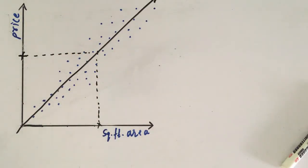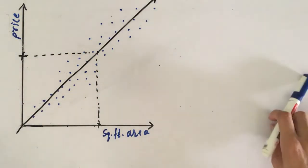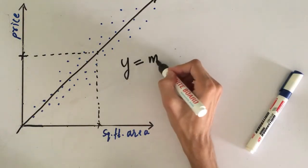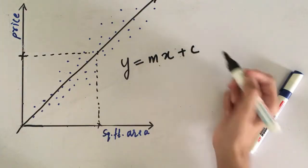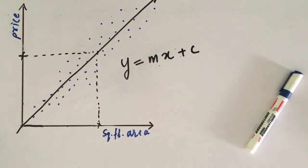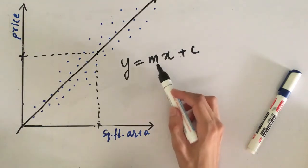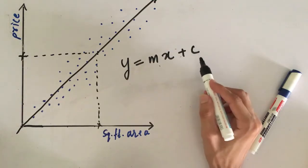And the equation of that line will be y equals mx plus c. That's basically your algebra that we have studied. Now I'm going to do slightly different and change this m to theta 1 and c to theta 0.